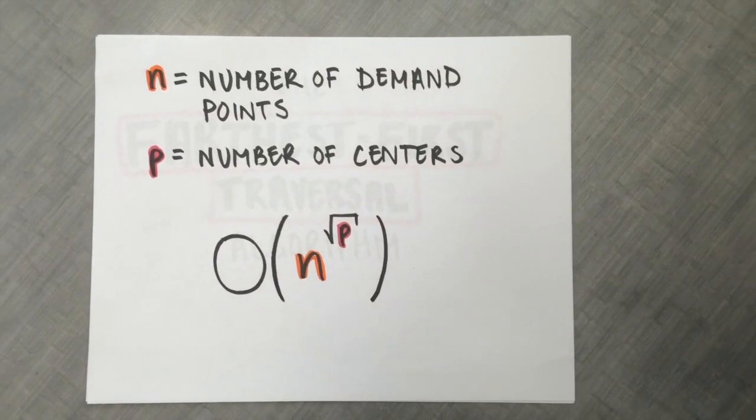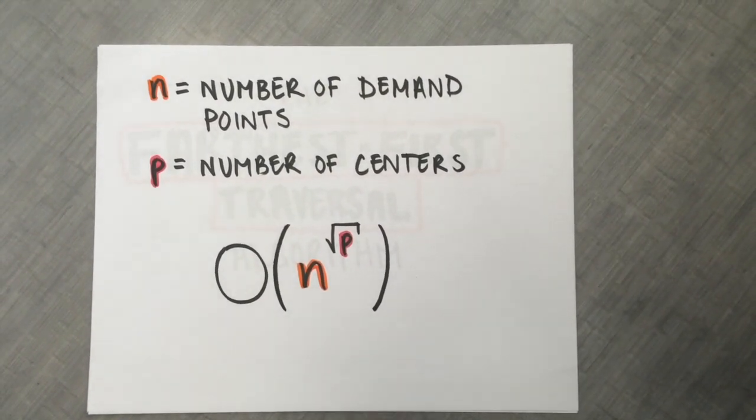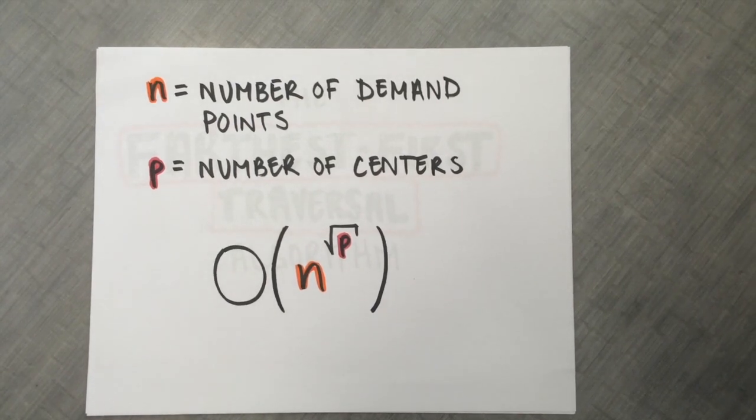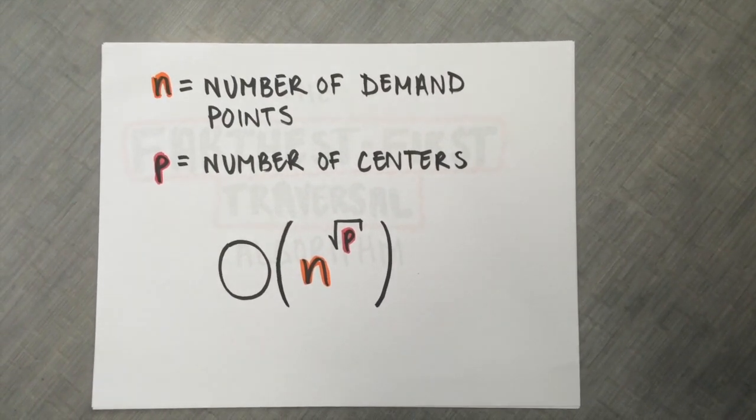Kariv and Hakimi proved in 1979 that the p-center problem is NP-hard. This means there is no efficient algorithm that always returns the right answer.